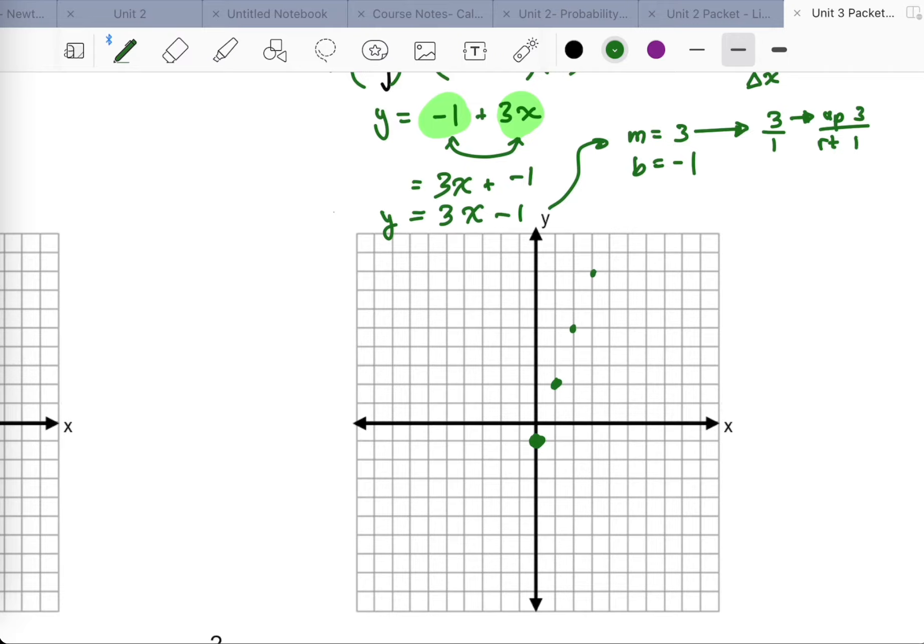You could also go the opposite direction because positive 3 over positive 1 is the same as negative 3 over negative 1, simplify to the same thing. Two negatives divide out to give you a positive, so that would allow you to go down 3, left 1 from any one point to get to another point along the line. So 1, 2, 3, over to the left 1, 1, 2, 3, over to the left 1, and so on. Like I said, slap a ruler on it. Draw your nice line, give it a label.